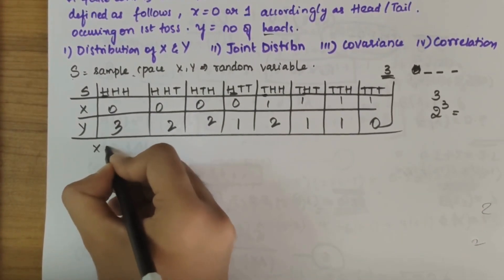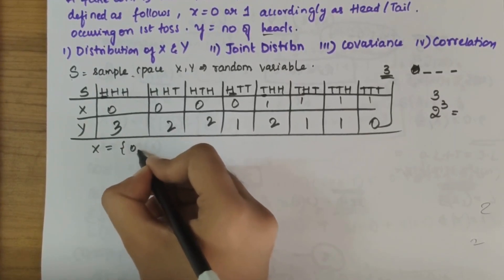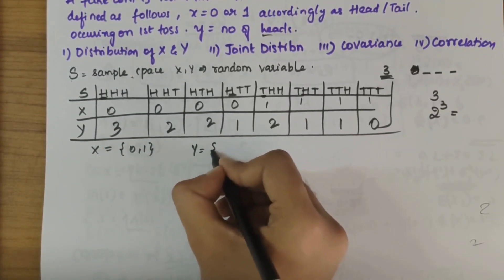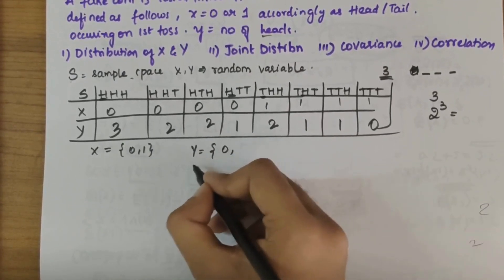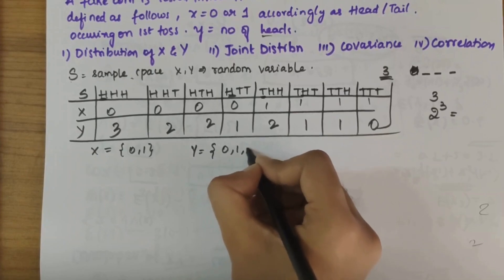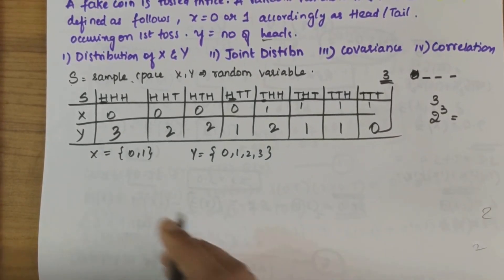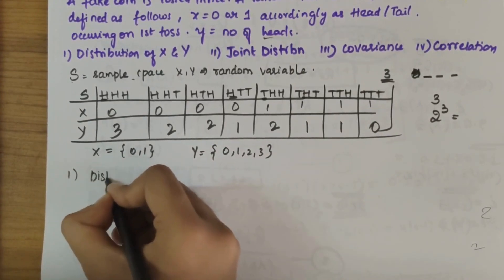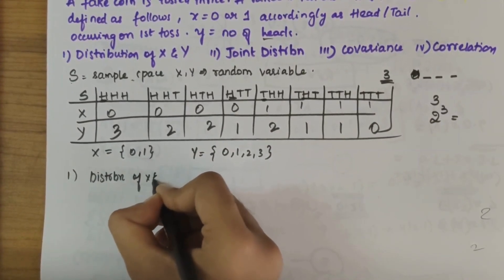From this table we can find the range of X and Y. The range of X is from 0 to 1, and the unique values of Y are 0, 1, 2, and 3.